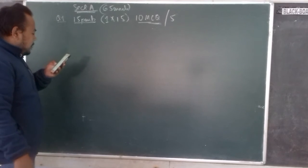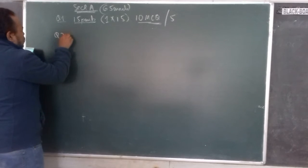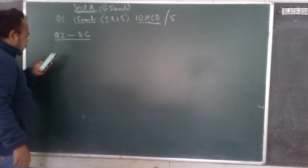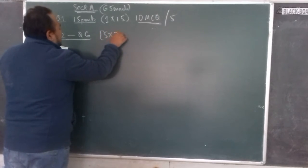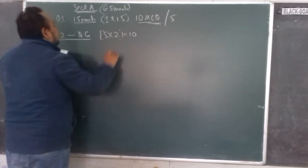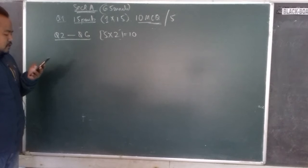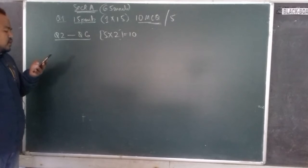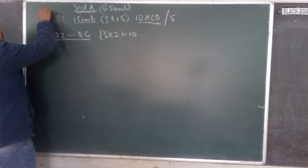Now for 2-mark questions: from question number 2 to question number 6, there will be 5 questions, 2 marks each, so 5 × 2 = 10. There will be 5 questions and each question will carry 2 marks.